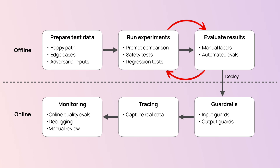And if something goes wrong, you can go back to the experimental cycle to test solutions. And after you run regression tests, you can deploy the fixes. Additionally, you should feed the new failure cases back into your evaluation datasets.